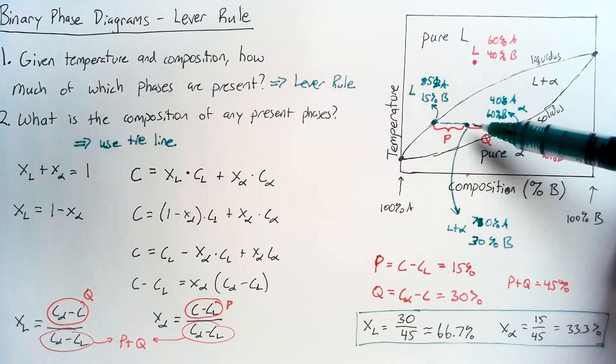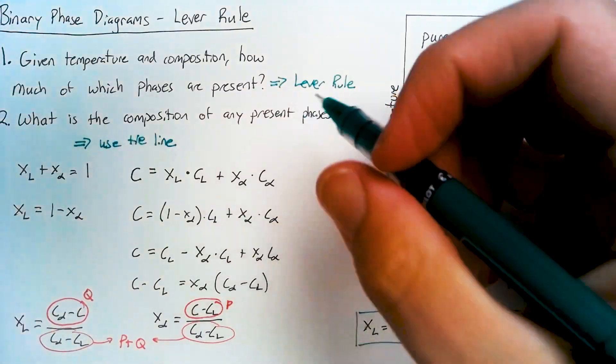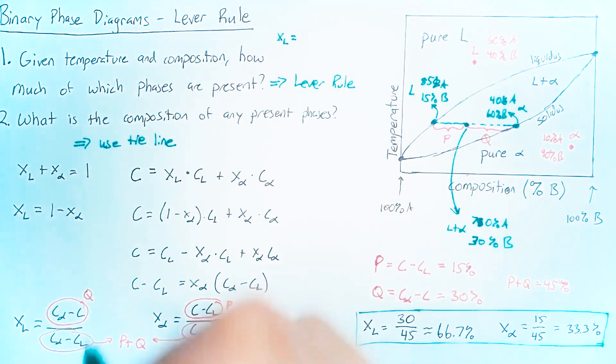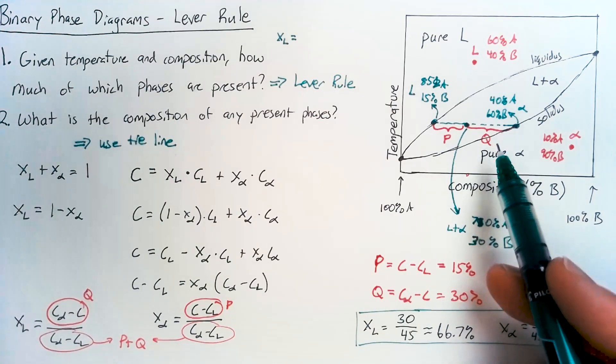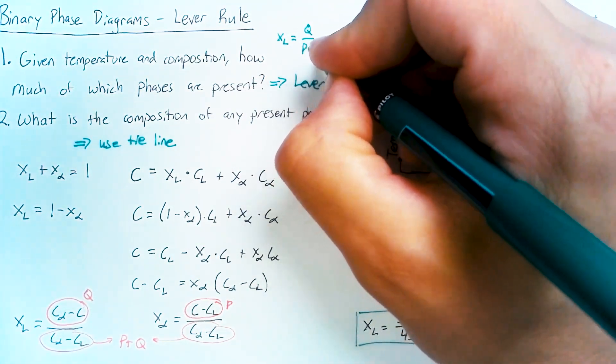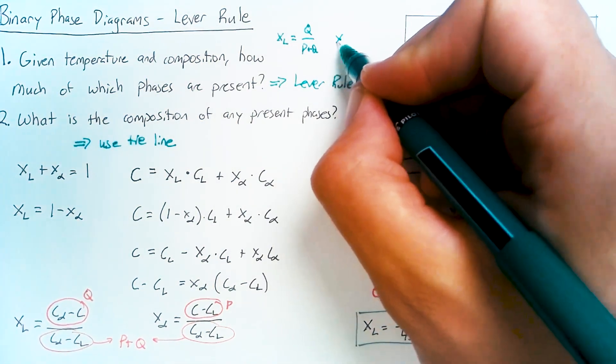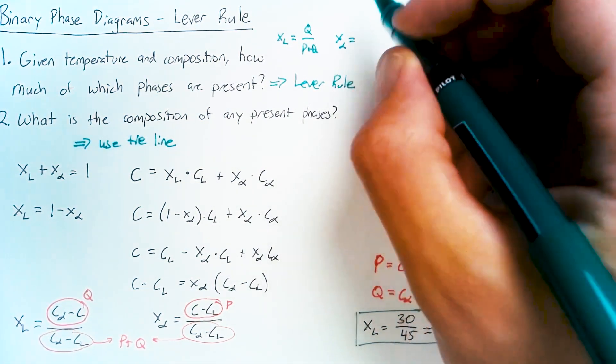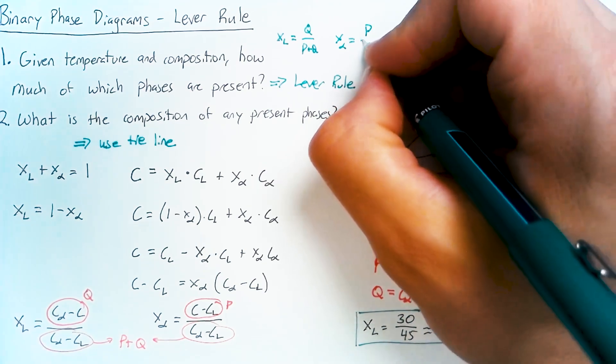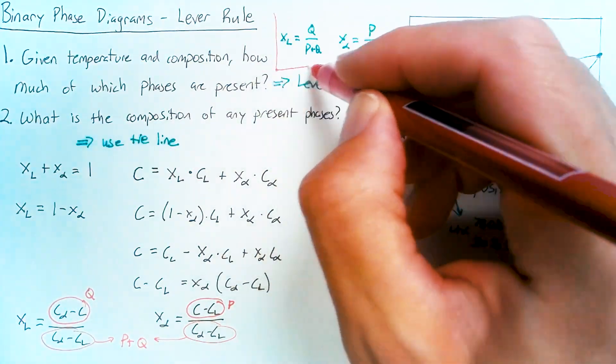But in order to figure out how much of those phases are present, we have to use this lever rule. And the lever rule, if we define these distances P and Q, it's just going to be Q divided by P plus Q to get the left-hand side. And for the right-hand side, which in this case is alpha, we end up with P divided by P plus Q.